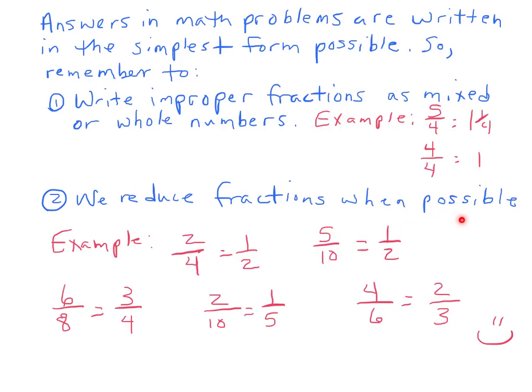We reduce fractions when possible. Here's our example. 2 fourths is the same as or equals 1 half. 5 tenths is 1 half. And always remember that rule: if the numerator is exactly half of the denominator, the answer is a half. 6 eighths is 3 fourths. Remember how we did that? We divided by 2 over 2. 2 goes into 6 three times, 2 goes into 8 four times. And on this one, 2 tenths equals 1 fifth. Same difference here. And 4 sixths is 2 thirds.